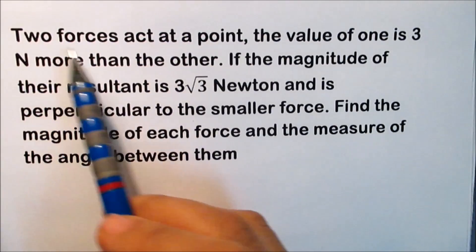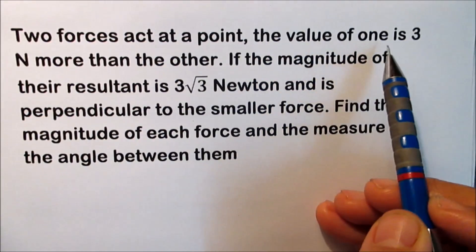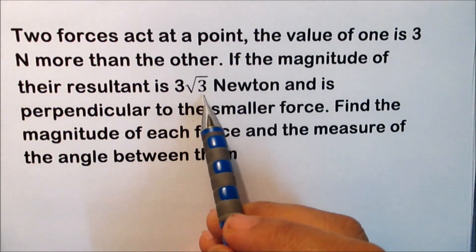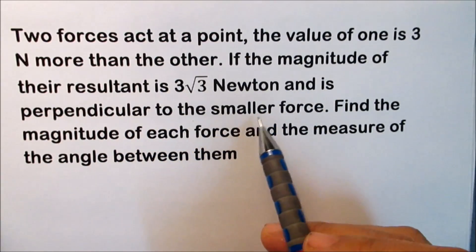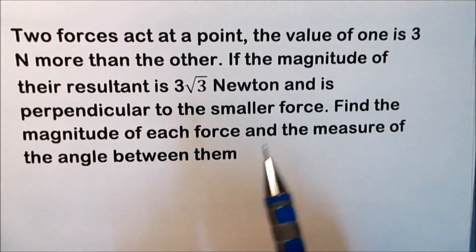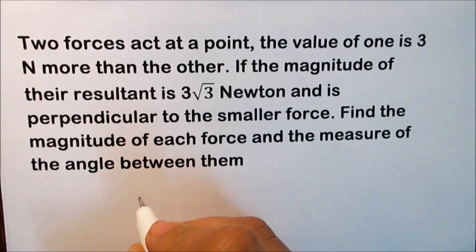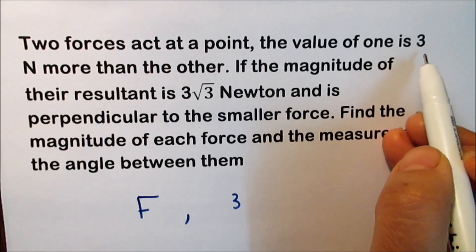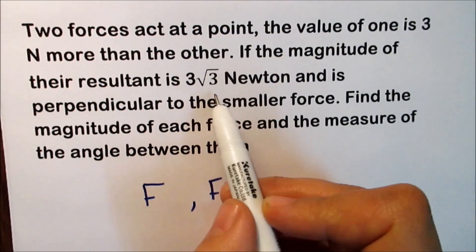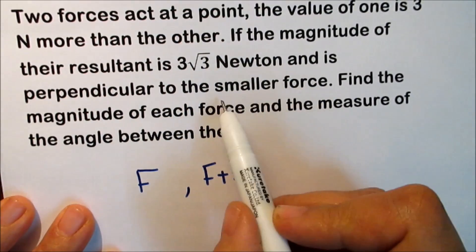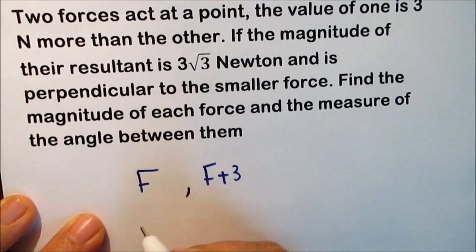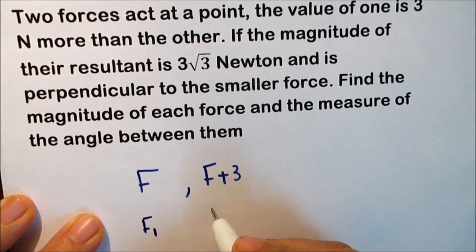Example 2: two forces act at a point. The value of one is 3 newtons more than the other. If the magnitude of the resultant is 3√3 newtons and the resultant is perpendicular to the smaller force, find the magnitude of each force and the angle between them. Assume the smaller force is f, so f1 = f and f2 = f + 3.